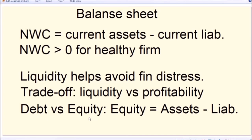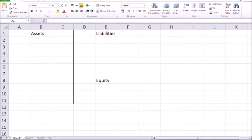Another key decision is how much debt versus equity to hold. For a given company size of, say, 100 million, the company might have 30% in debt (30 million) versus 70 million in owner's equity, or alternatively 70% in debt versus only 30% in owner's equity. This decision depends a lot on the type of industry. Rearranging the balance equation tells us that Owner's Equity = Assets − Total Liabilities.